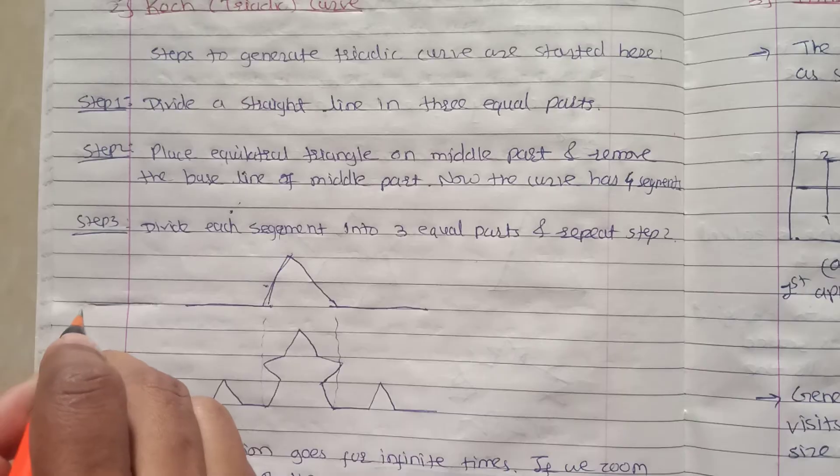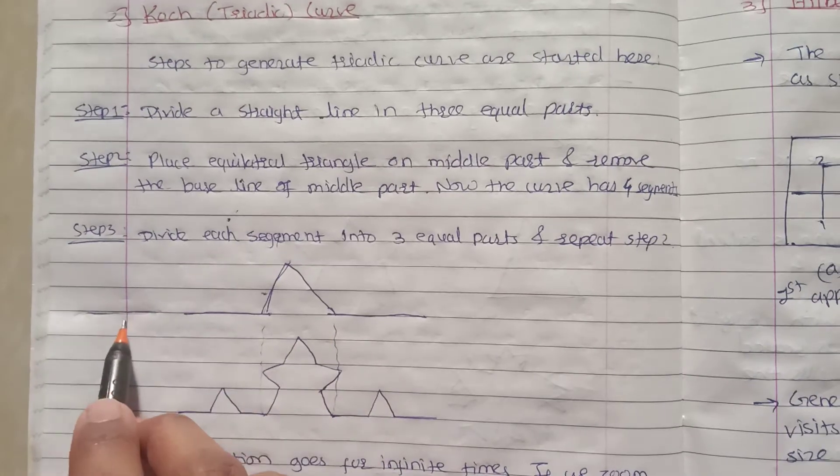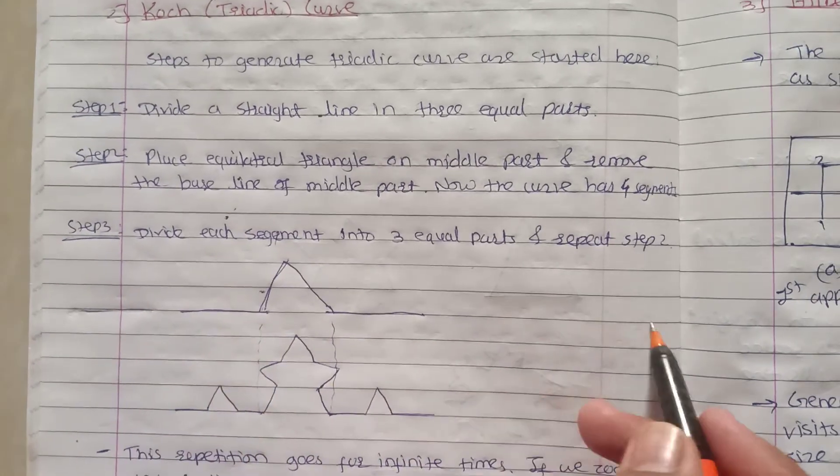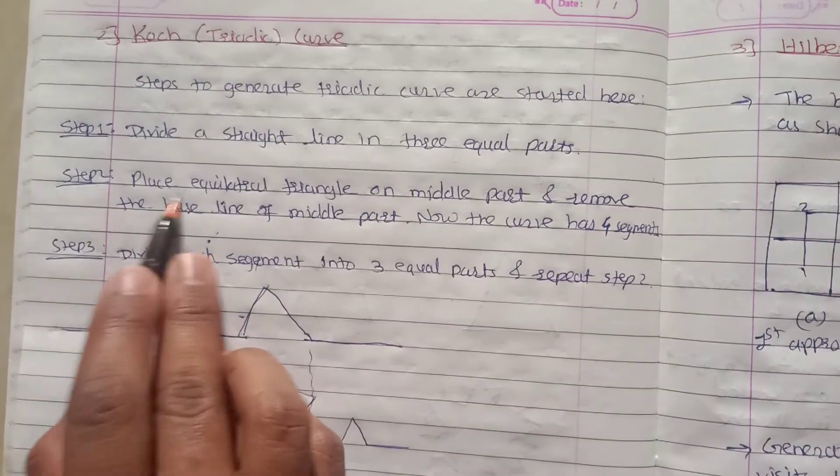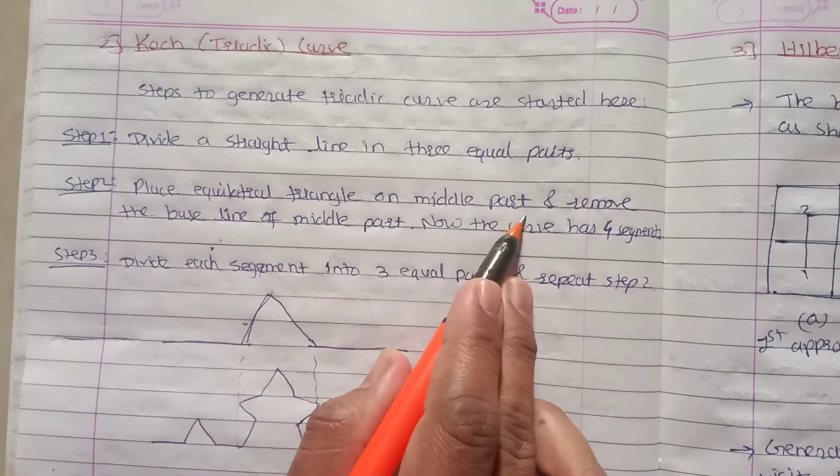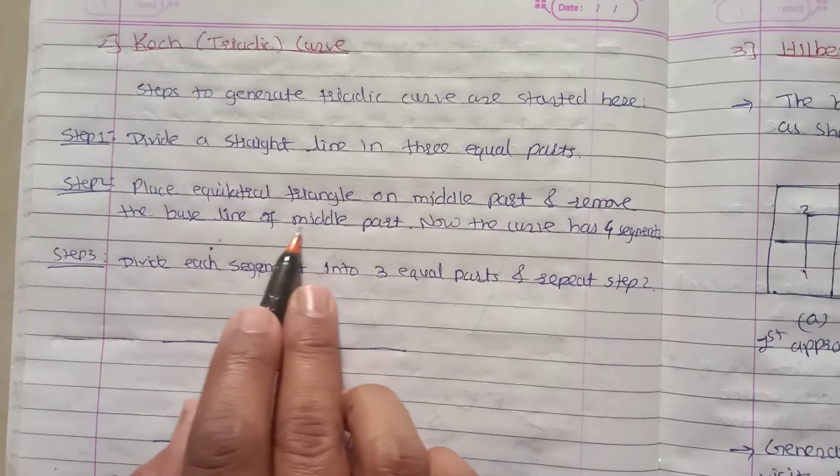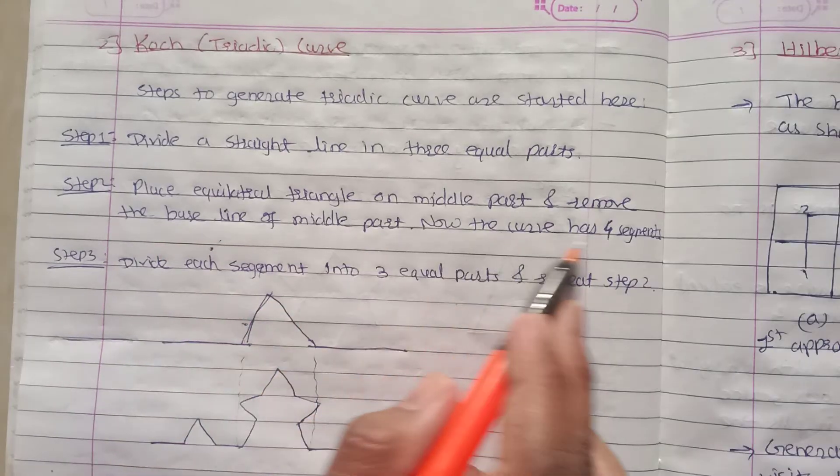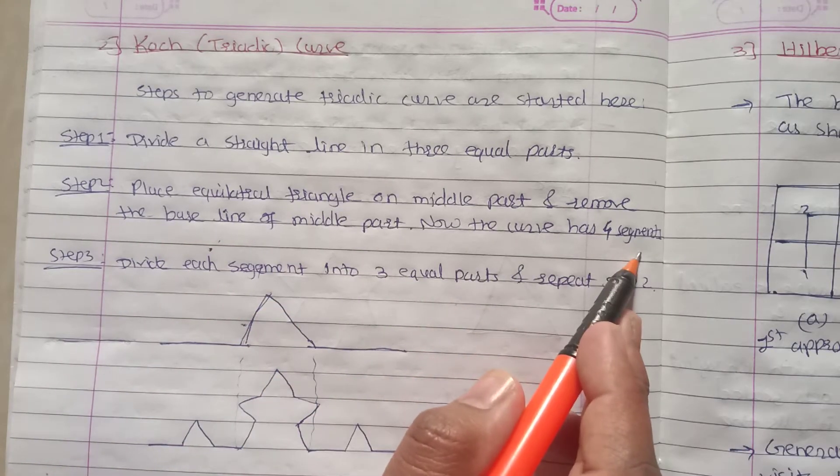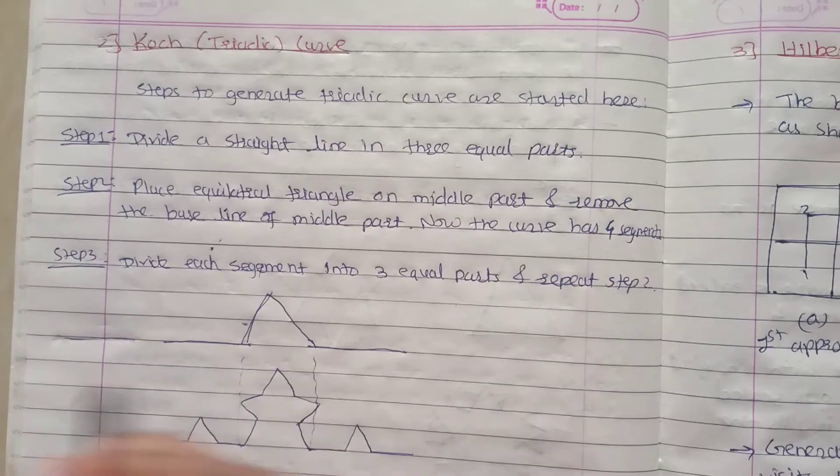Then place the equilateral triangle on the middle part and remove the baseline of the middle part. Now the curve has four segments.